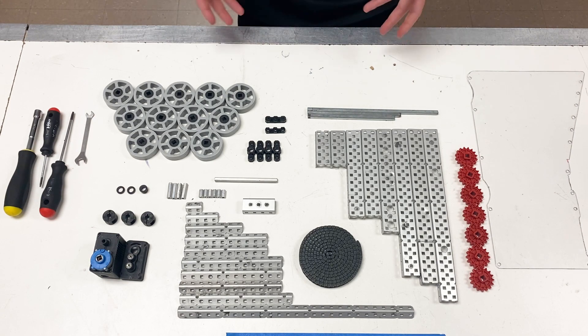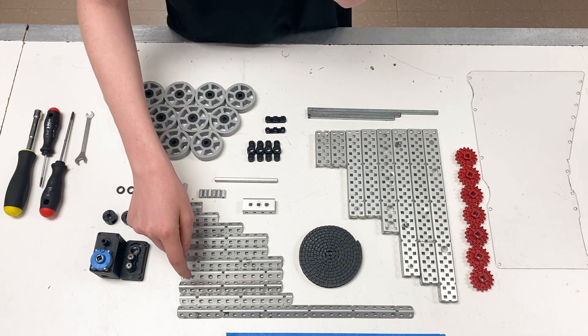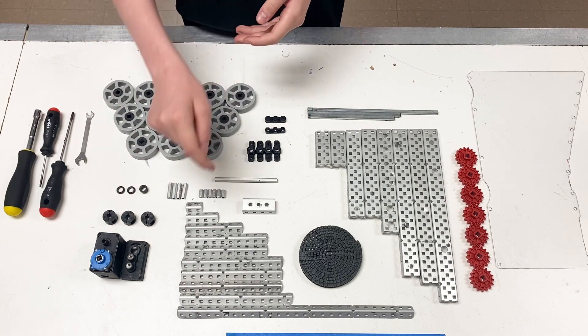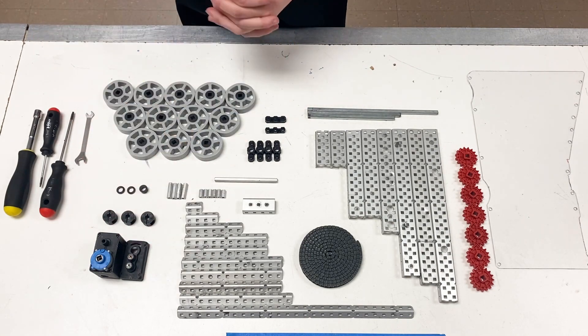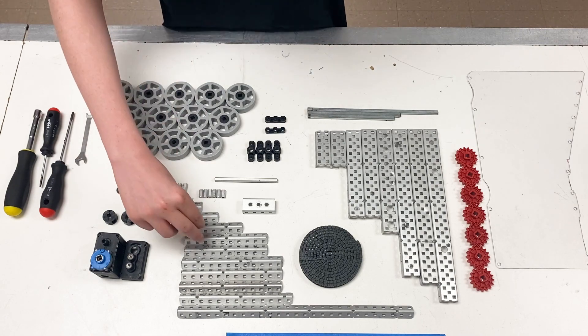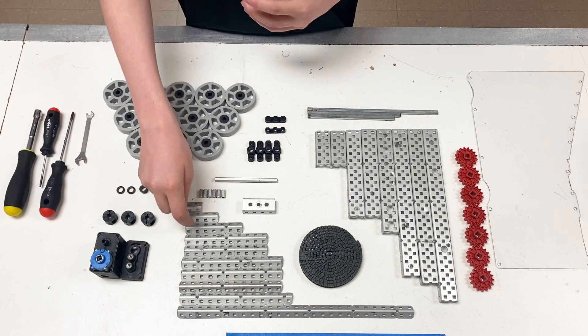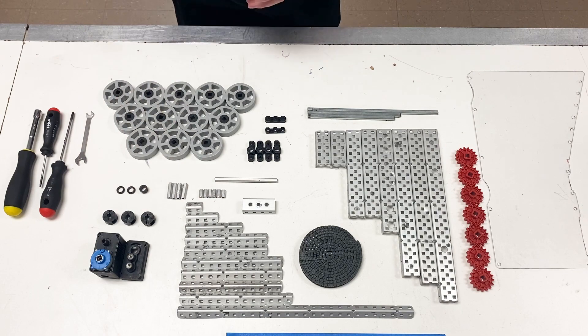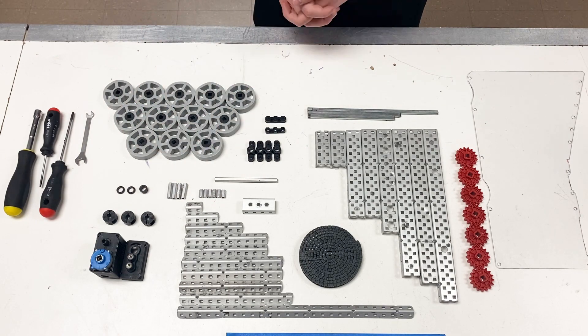Out of the one-bys, we have a 27-hole one-by, a 13-hole one-by, two or three 12-hole one-bys, two 10-hole one-bys, a 7-hole one-by, a 4-hole one-by, and a 2-hole one-by.